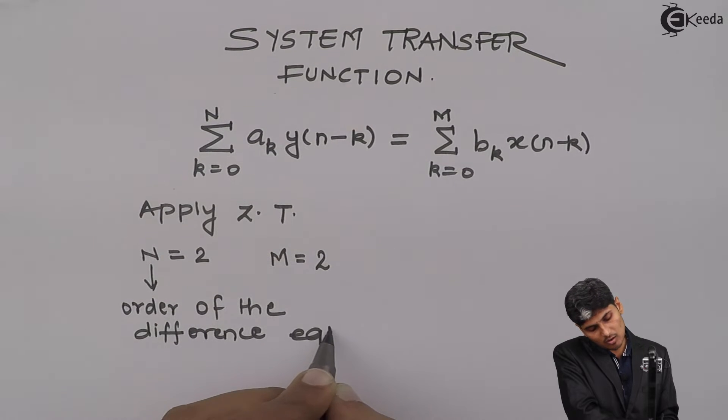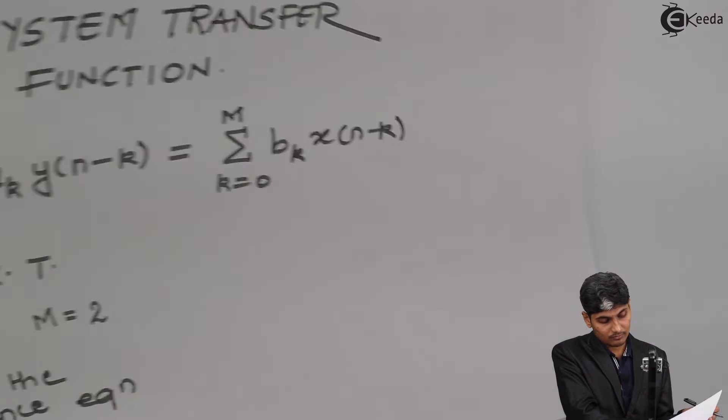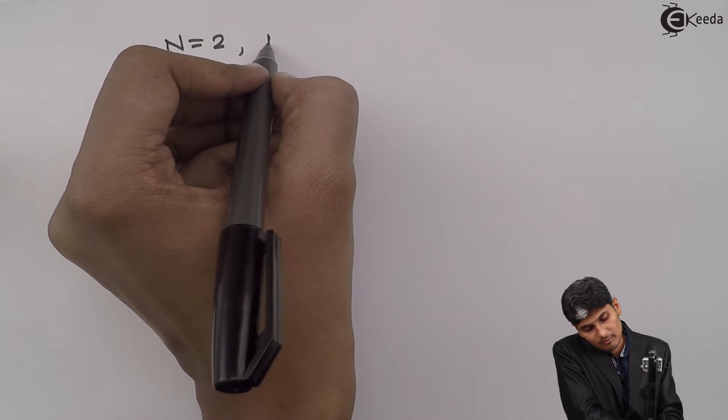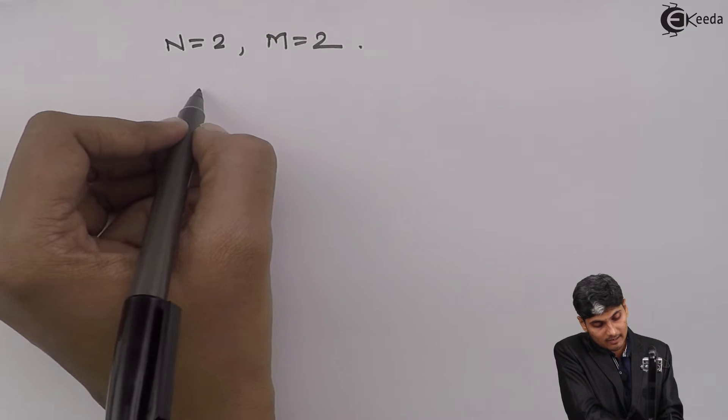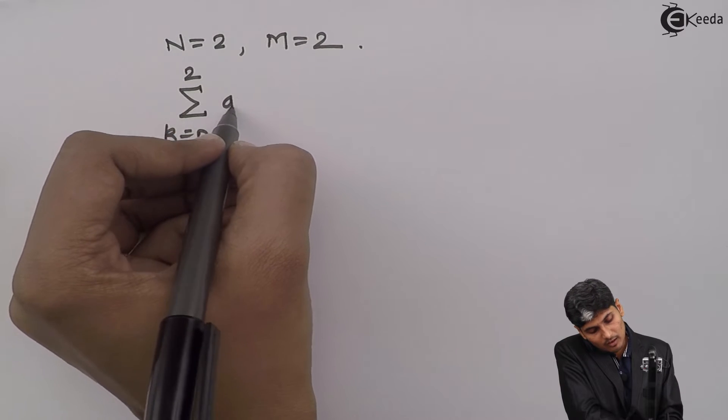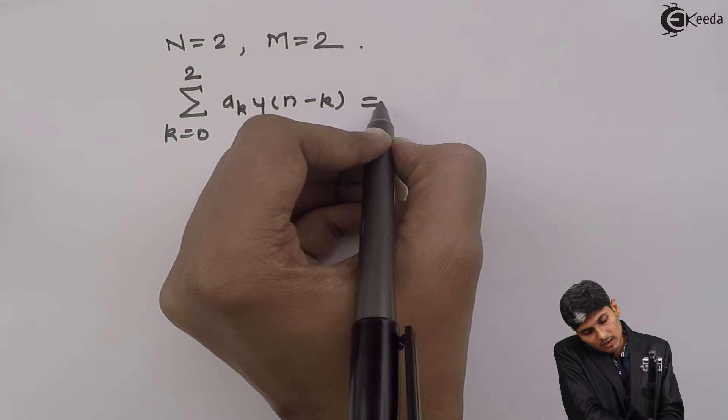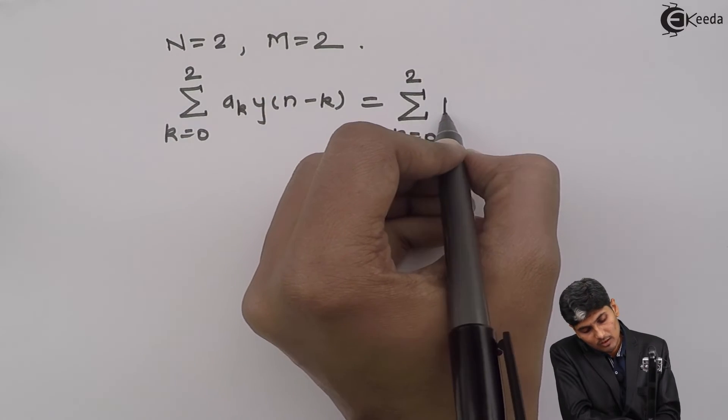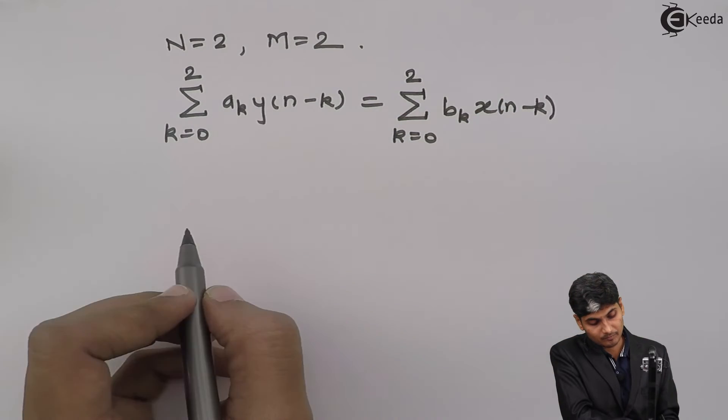n is called as the order of a difference equation. Now, with this assumption with n equals 2 and m equals 2, I will rewrite the equation as summation k going from 0 to 2, a_k y(n-k) equals summation k going from 0 to 2, b_k x(n-k).